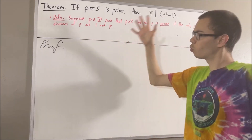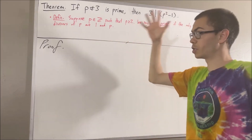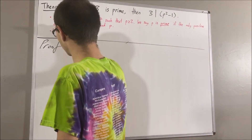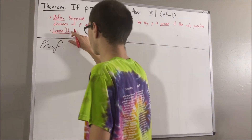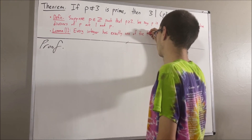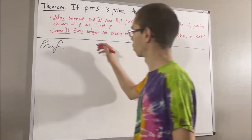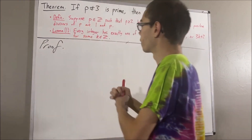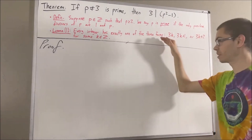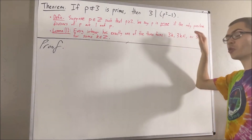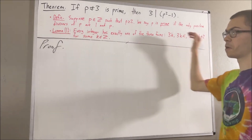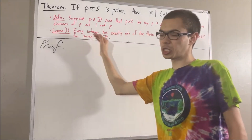We're also going to use the following preliminary result in proving this theorem. Every integer has exactly one of the three forms: 3k, 3k plus 1, or 3k plus 2, for some integer k.